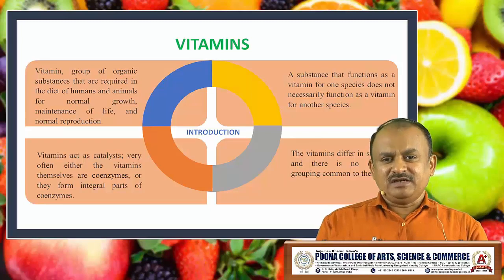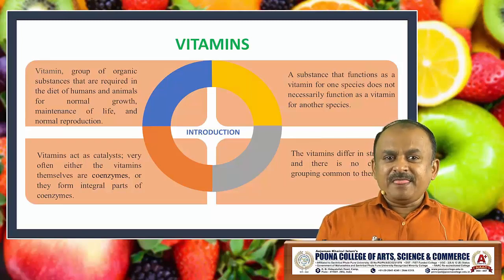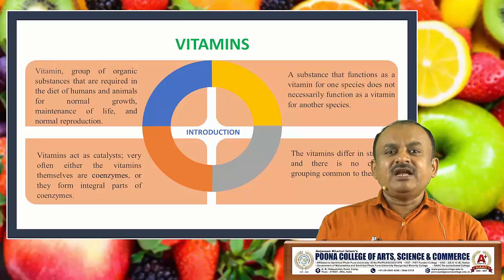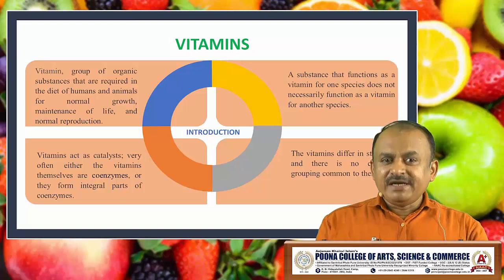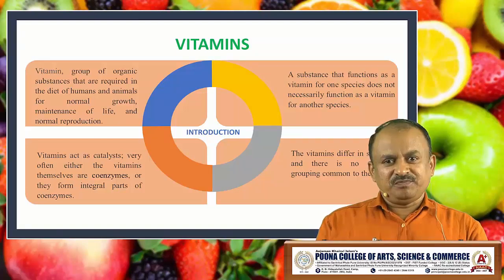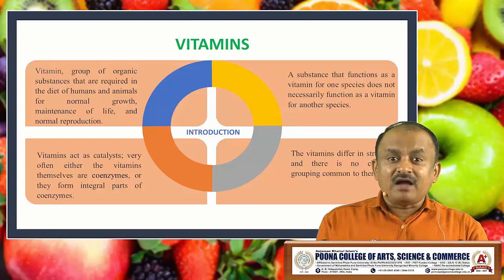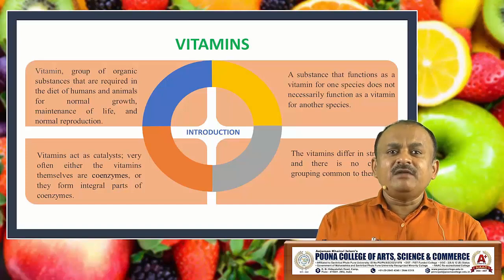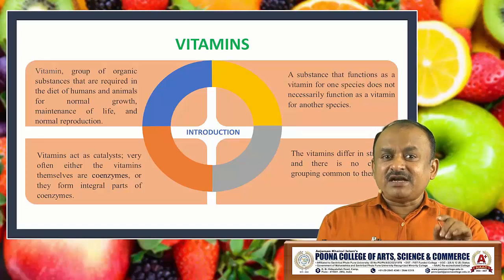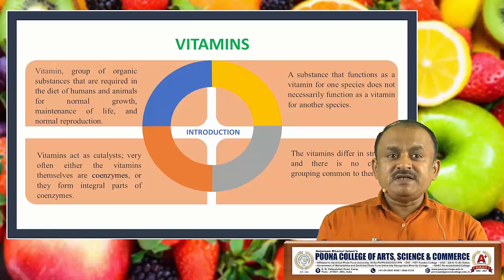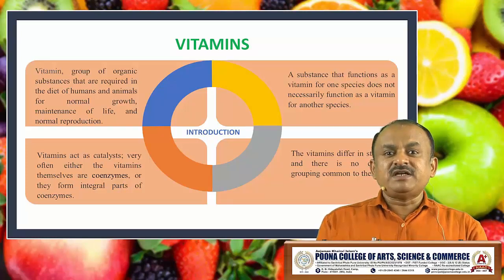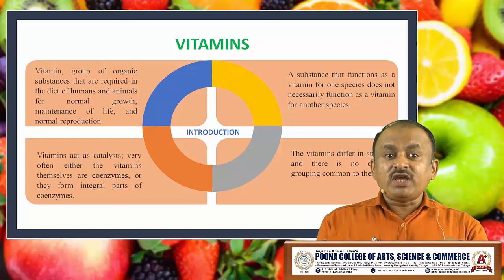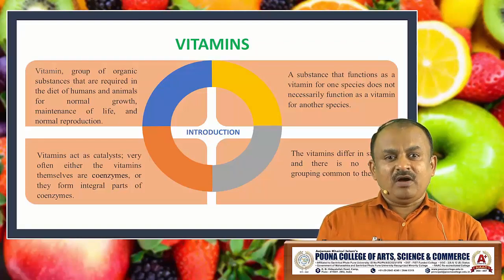As far as the introduction of vitamins is concerned, vitamins are a group of organic substances that are required in the diet of humans and animals for normal growth, maintenance of life and normal reproduction. Vitamins act as a catalyst. Very often, either the vitamins themselves are coenzymes or they form an integral part of the coenzymes. A substance that functions as a vitamin for one species does not necessarily function as a vitamin for another species. The vitamins differ in structure and no chemical grouping is common to them all.